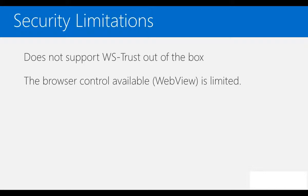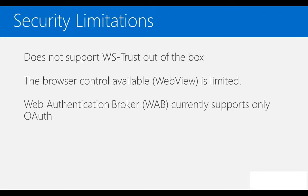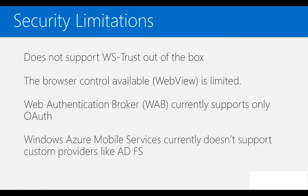To address such scenarios, Windows Store applications offer the WebAuthenticationBroker control. You can think of WebAuthenticationBroker as a sandboxed browser control designed specifically for authentication purposes. At present, WebAuthenticationBroker supports only OAuth. On Windows Store apps, we can also use Windows Azure Mobile Services to authenticate against third-party identity providers. As of today, Windows Azure Mobile Services is in beta and does not offer extensions to add custom identity providers like ADFS or custom STS.